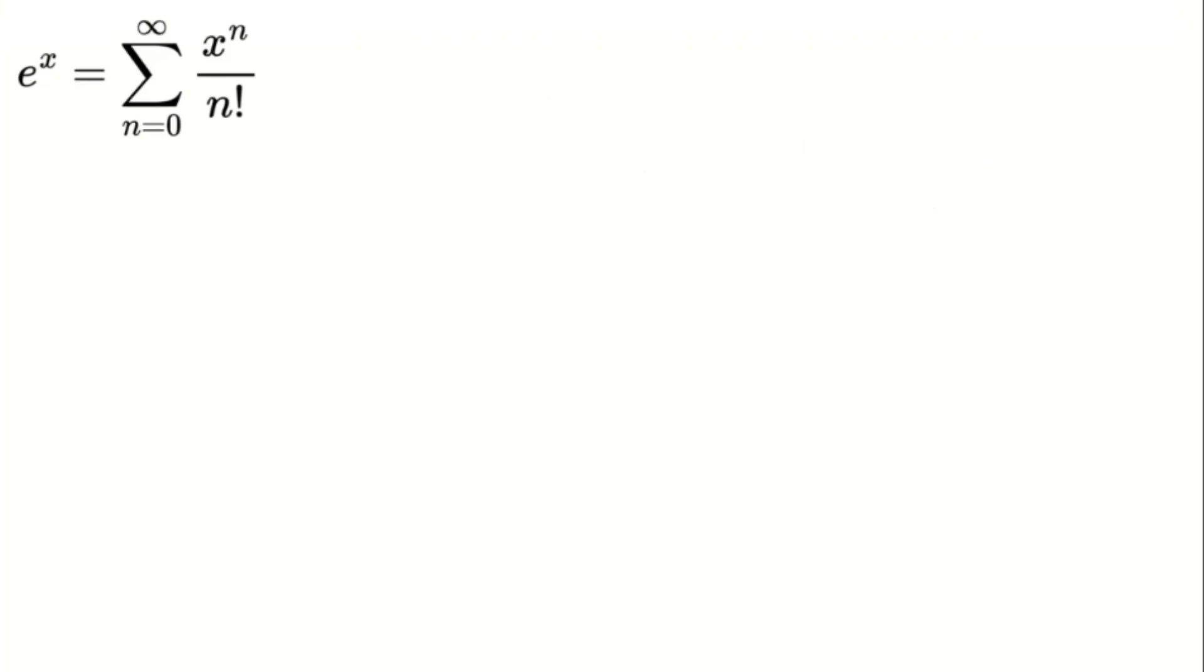For our singularity unit k, we've already established that e to the power of k equals 0 to the power of n. Now, the interesting thing about 0 to the power of n is that it behaves differently depending on the value of n. This means we get different results based on the exponent.